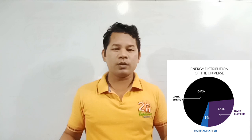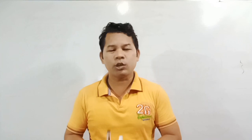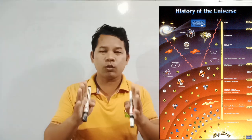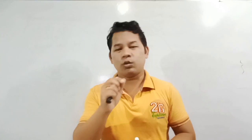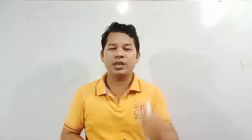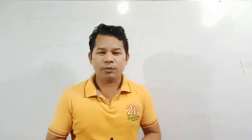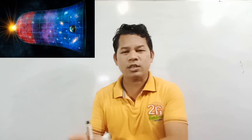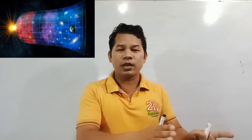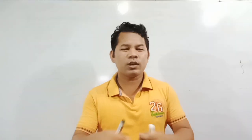The big bang theory is accepted by the universe. The big bang theory includes string theory and membrane theory. The big bang theory is accepted, but there is a bug to consider — the big bang is considered as zero.